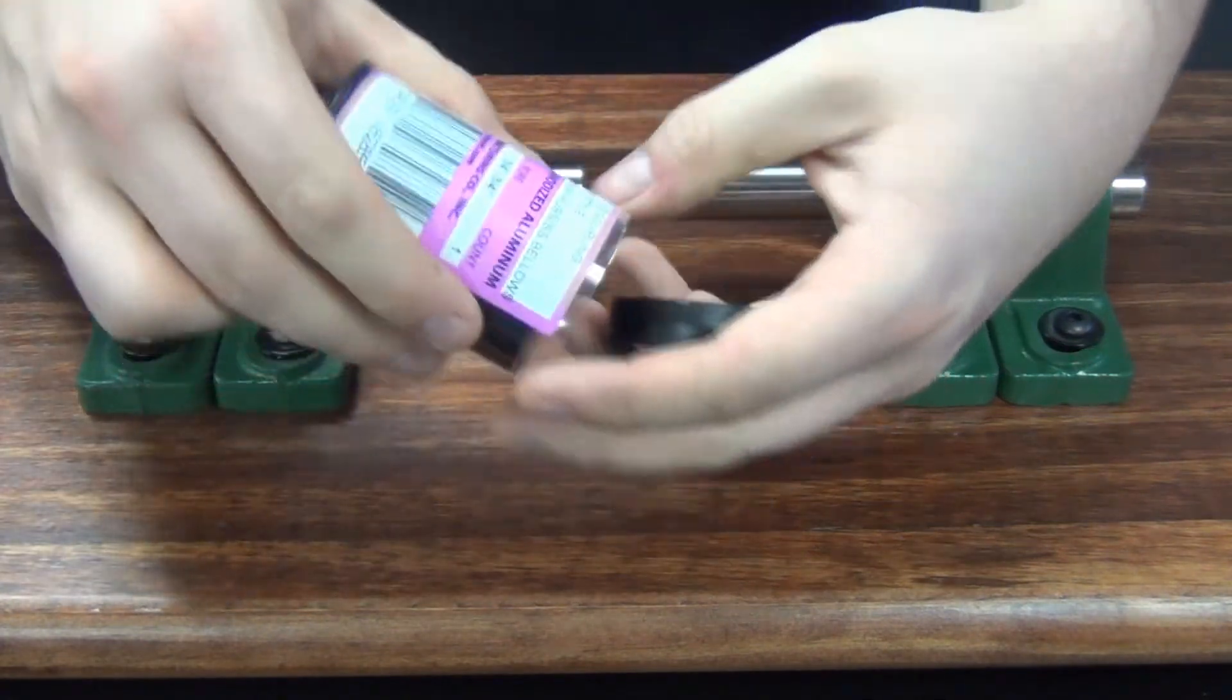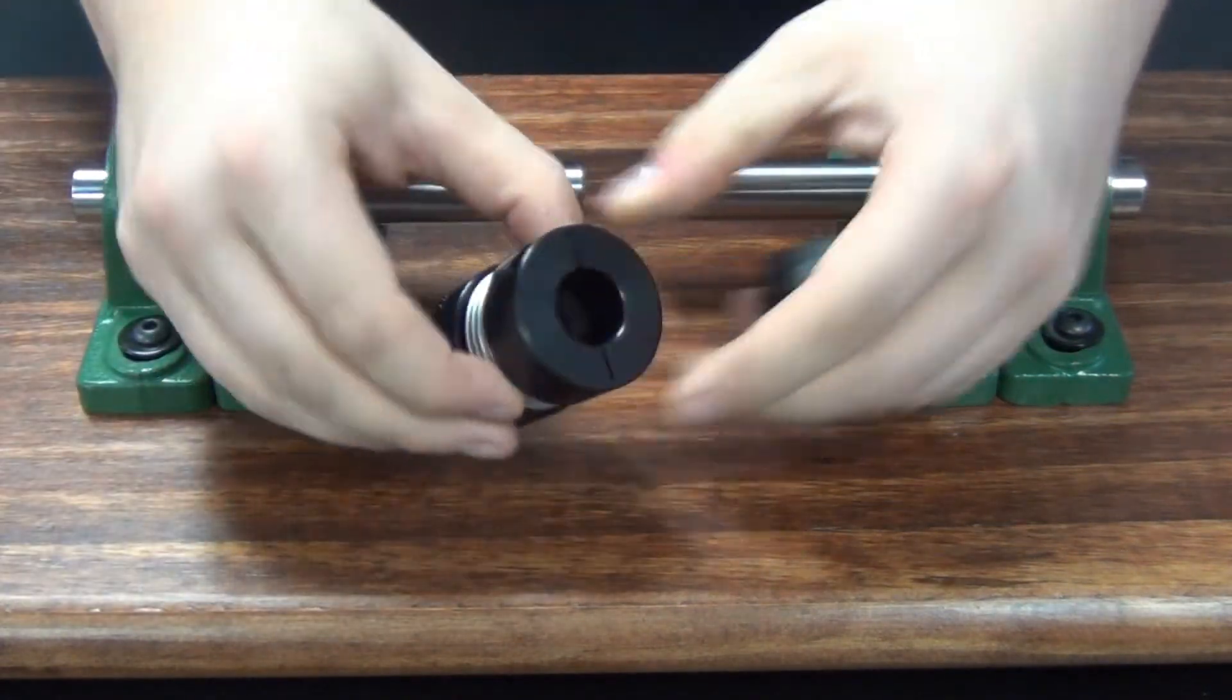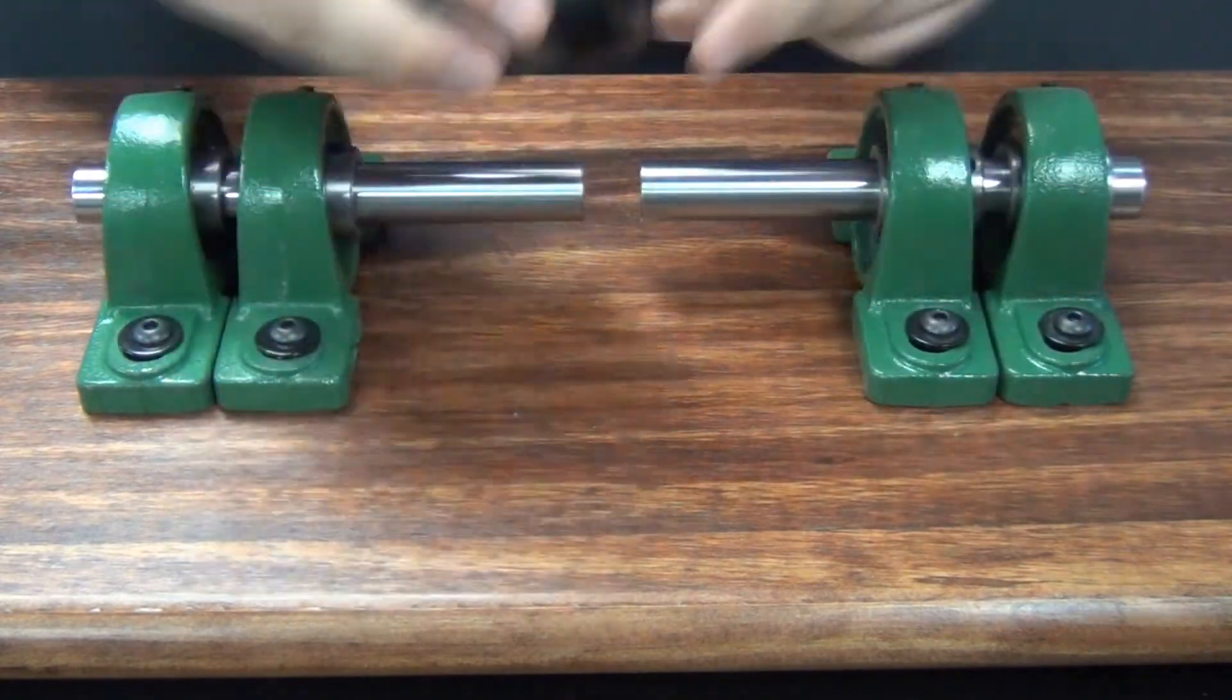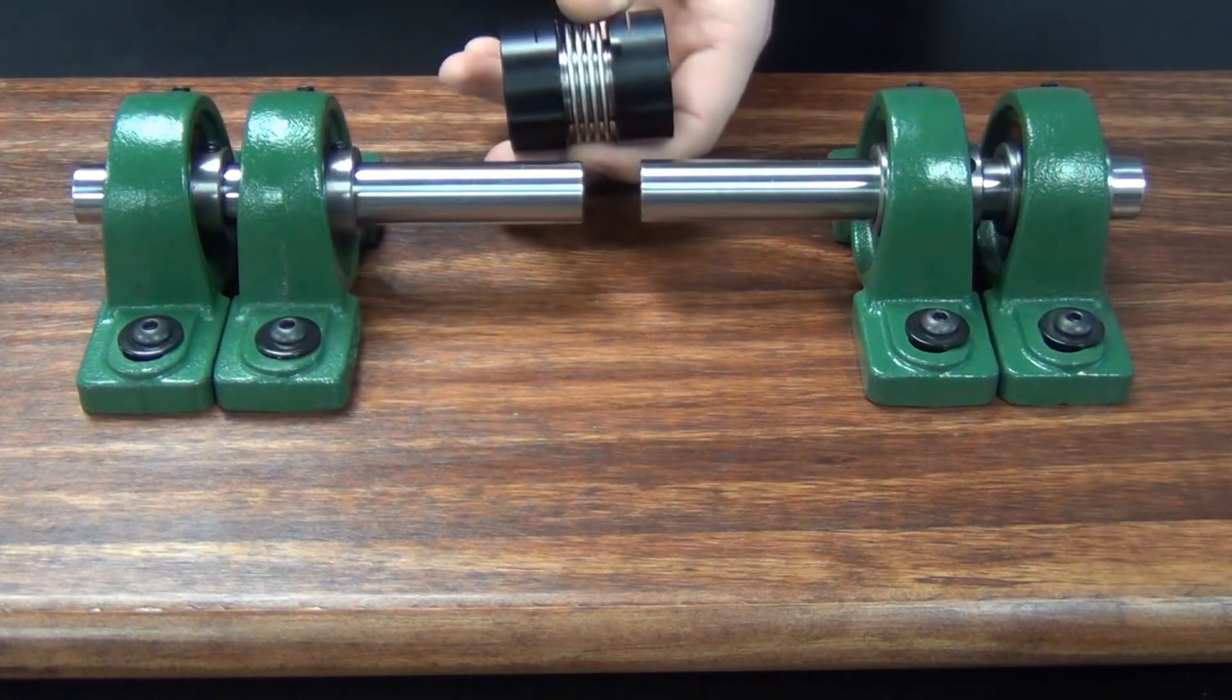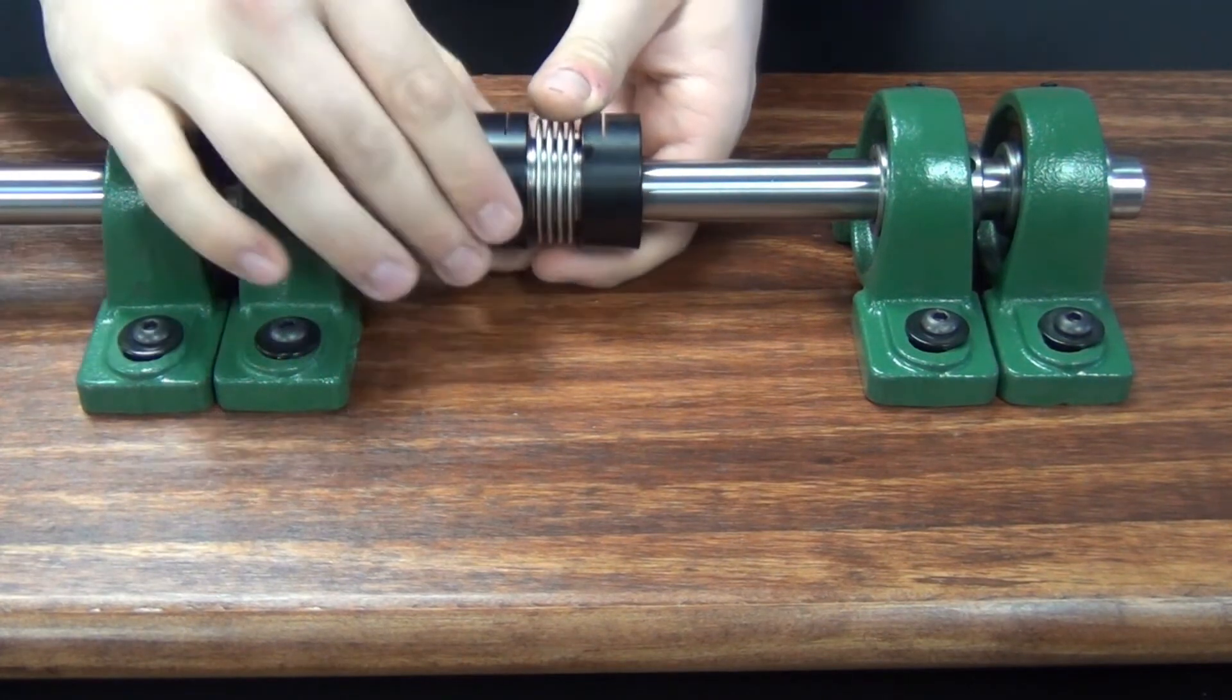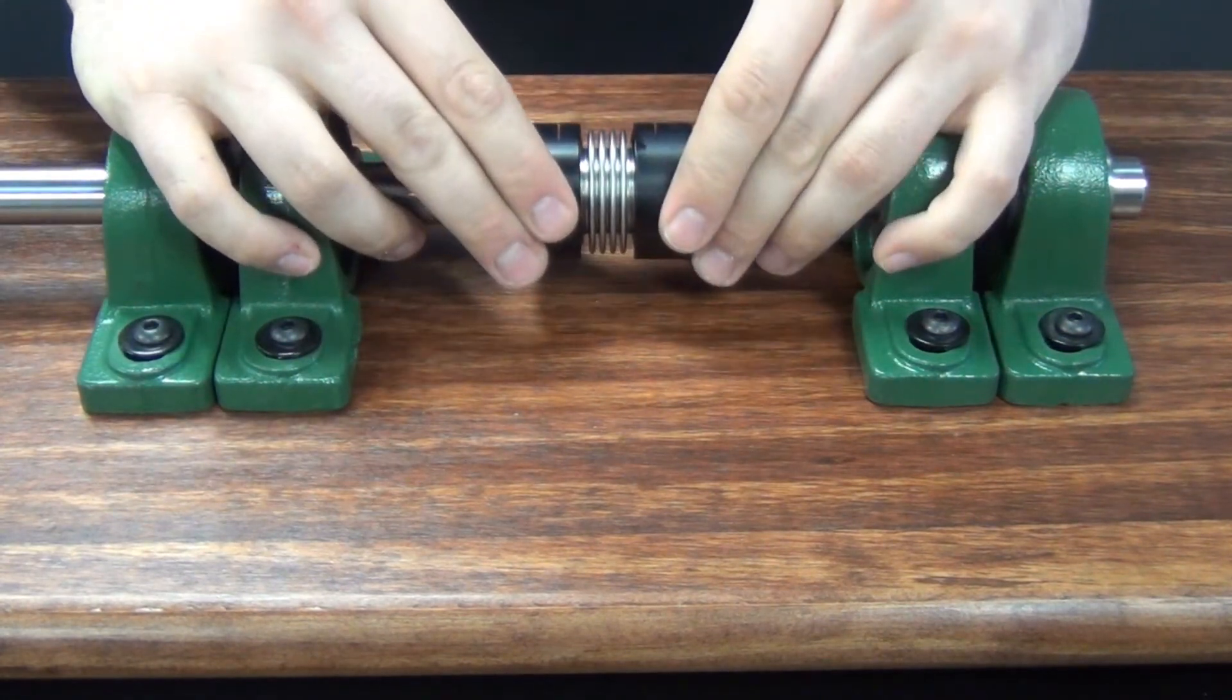Next, we remove the bellows coupling from its packaging and place it on the shafts. The shafts extend into the relieved portion of the bore as long as it does not exceed the shaft penetration length. This information can be found on the product specification page along with 3D CAD drawings.